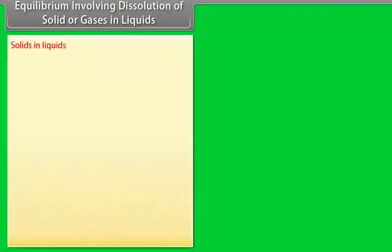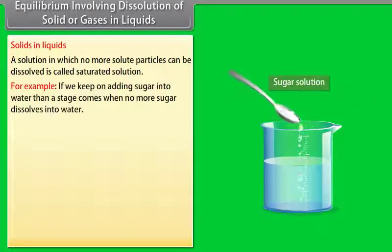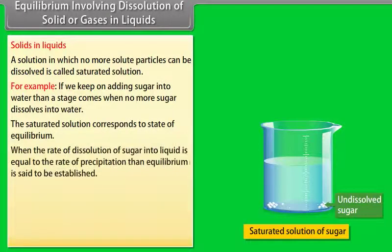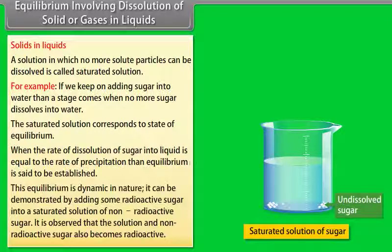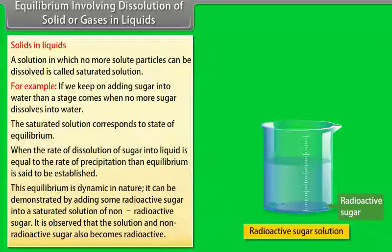Equilibrium Involving Dissolution of Solid or Gases in Liquids — Solids in Liquids: A solution in which no more solute particles can be dissolved is called a saturated solution. For example, if we keep adding sugar to water, a stage comes when no more sugar dissolves. The saturated solution corresponds to a state of equilibrium, where the rate of dissolution equals the rate of precipitation. This equilibrium is dynamic, demonstrated by adding radioactive sugar to a saturated non-radioactive sugar solution — the solution becomes radioactive.